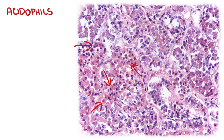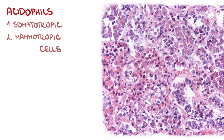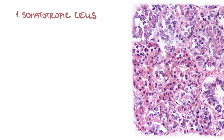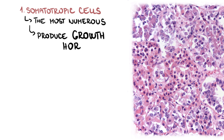Acidophils include somatotropic and mammotropic cells. Somatotropic cells are the most numerous chromophils in pars distalis, making up more than half of them. They produce growth hormone, synonymously called somatotropin.